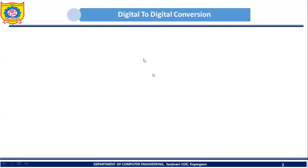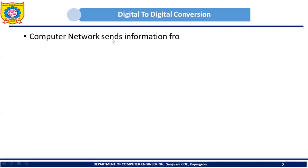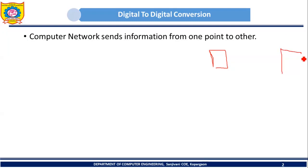Welcome everybody. Now we are going to discuss digital to digital conversion. We know that computer networks send information from one point to another. Let's assume we have one computer and another computer which is far away from the first computer, and these two computers are connected by using some network.